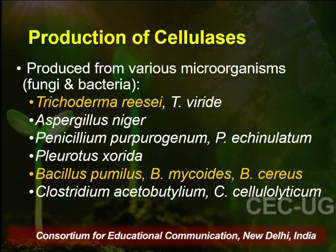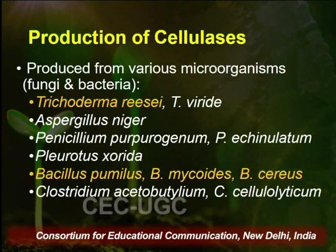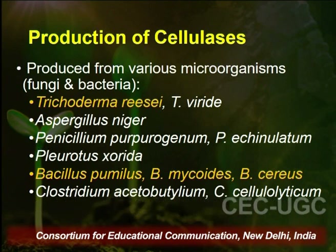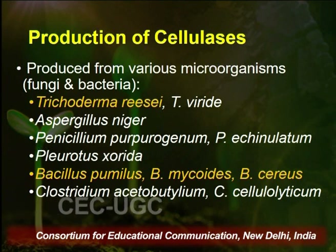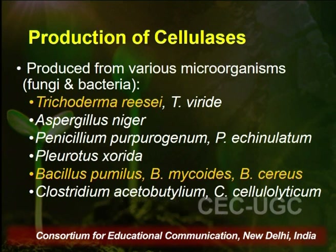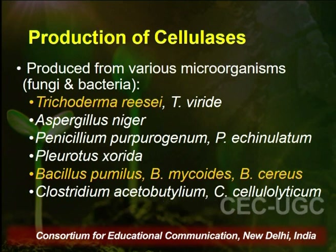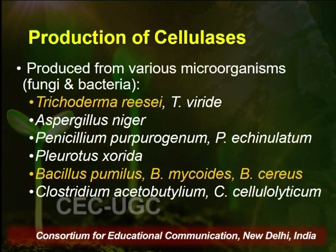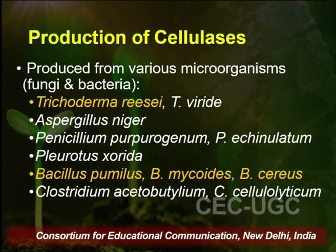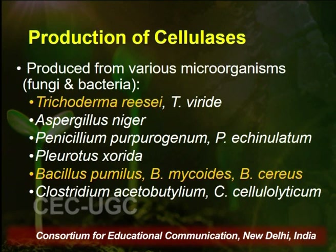Cellulases are produced commercially by fermentation of different microorganisms, specifically fungi and bacteria. Fungi belonging to the genera Trichoderma, Aspergillus, Penicillium, and Pleurotus are used commercially, with Trichoderma reesei being the most widely used species. Among bacteria, Bacillus pumilus, Bacillus mycoides, and Bacillus cereus are largely used to produce cellulase enzyme after fermentation.